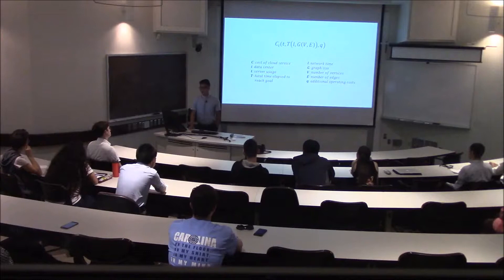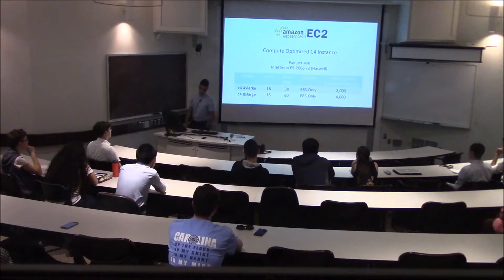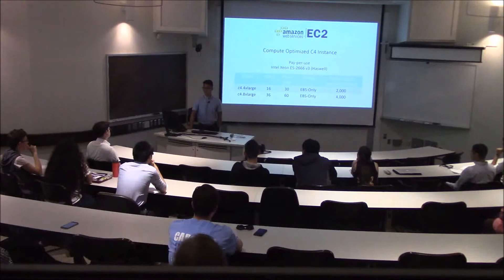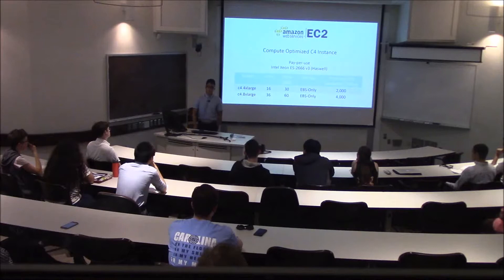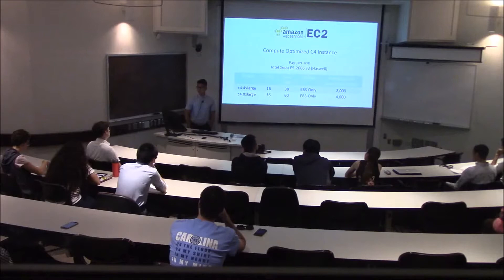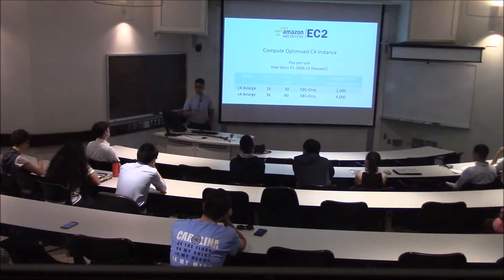We evaluate this cloud computation method with Amazon Web Services EC2, a compute-optimized C4 instance, their latest instance, on a pay-per-use package. It uses Intel Xeon E5-2666 V3 Haswell processors. We specifically run our experiments on two instances: the C4-4XLarge and the C4-8XLarge, which respectively have 16 vCPU and 36 vCPU. Because these instances are hyper-threaded, two vCPUs correspond to one core, so the C4-4XLarge has eight cores whereas the C4-8XLarge is more equivalent to an 18-core processor.